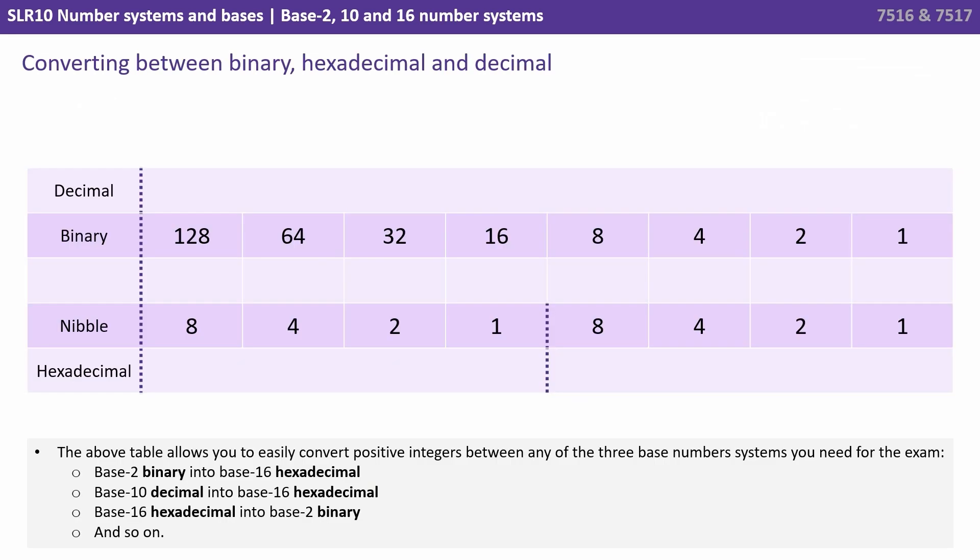Now I've introduced the three base number systems you need to know about for computer science, you need to become familiar with easily converting between any of them to any other form in the exam. The above table allows you to easily convert positive integers between any of the three base number systems you need. Once you're familiar with the process, you'll be able to do away with the table and just convert them by hand.